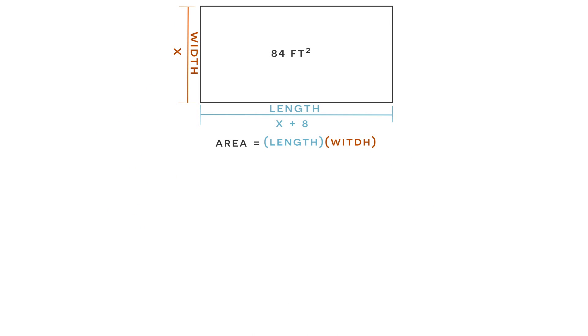And now we have a lot of information which we can substitute into this equation. We know that the length of the rectangle has a distance of x plus 8, so we can substitute x plus 8 in for the length. We know that the width has a distance of x, so we can substitute an x in for the width. And we know that the area of the rectangle is equal to 84 square feet, so we can substitute 84 in for the area.